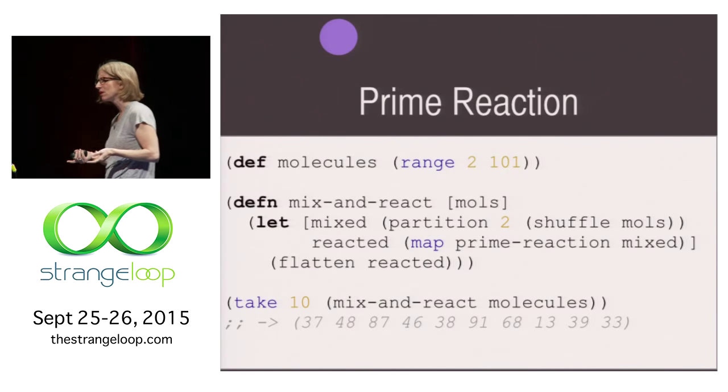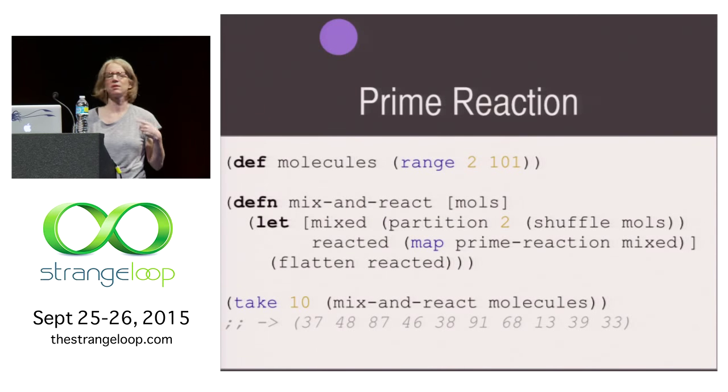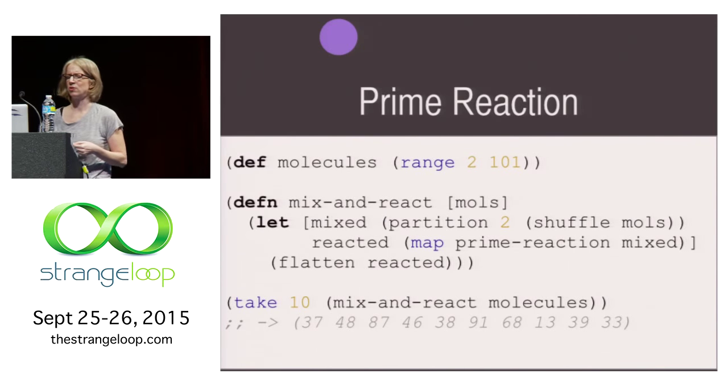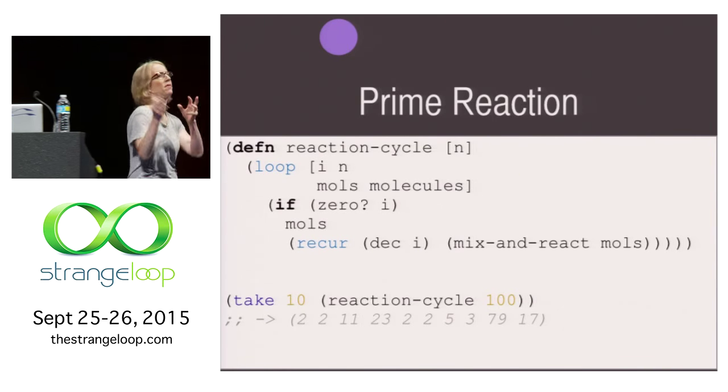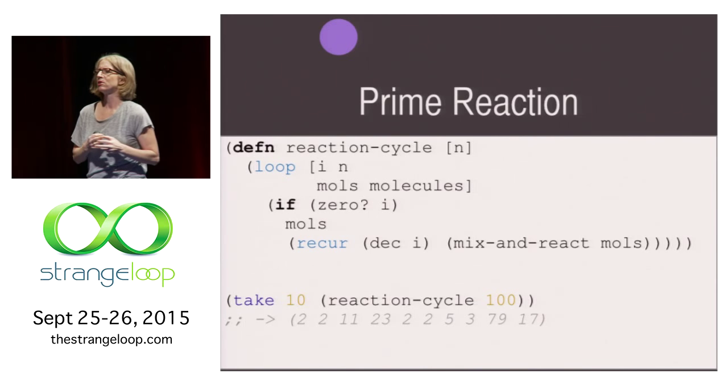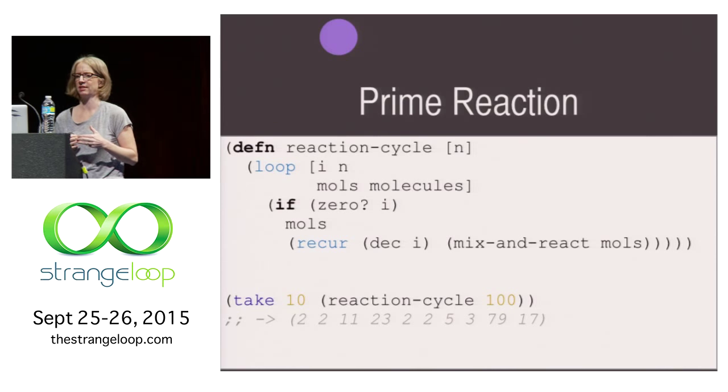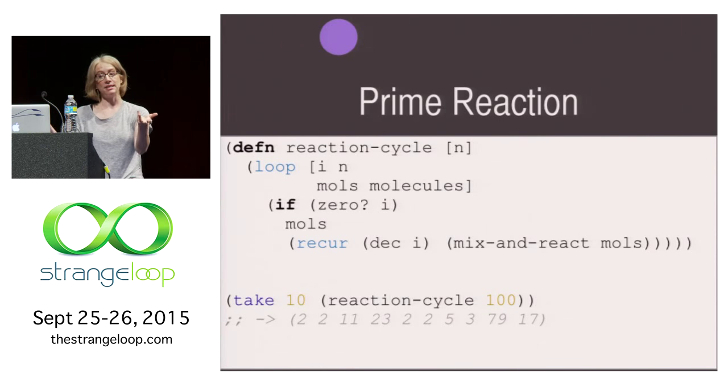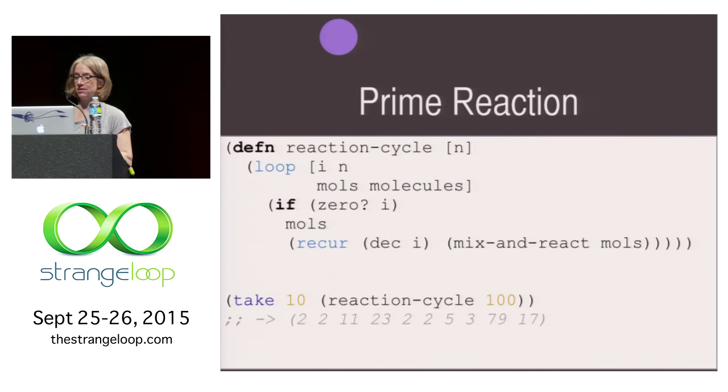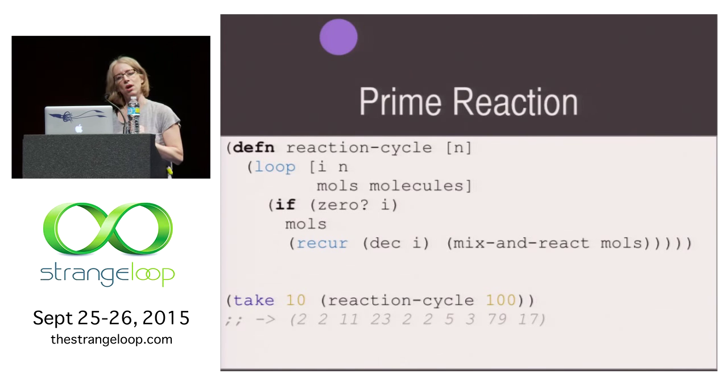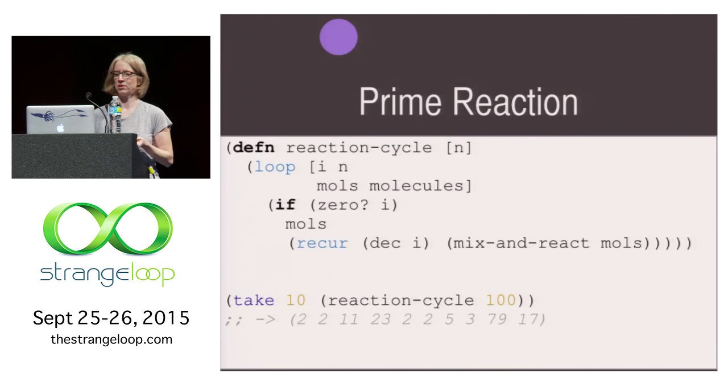If we look at the first 10 from doing this mix and react, we can see, hmm, well, there definitely may be some primes here, but there's definitely not some primes here. So it's kind of hard to tell exactly. It might be doing some work. Maybe we need to do this more times. We need to shuffle them up and mix them up and react them more times. Let's make another function called a reaction cycle. We can do this n times. It's just going to go ahead and mix and react them, mix and react them for n times. We can go ahead and do this reaction cycle 100 times and then peek at the first 10 results.